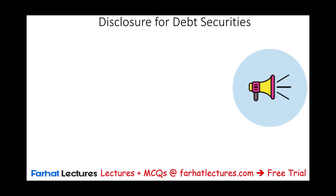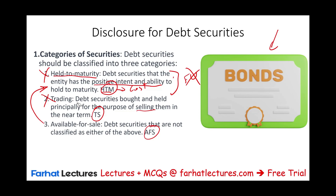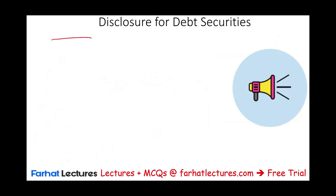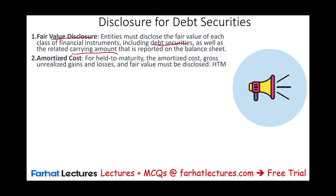What do we have to disclose in addition to the categories? Trading and available for sale are reported at fair value, so we need a fair value disclosure. Entities must disclose the fair value of each class of instrument, including debt securities, as well as any related carrying amount reported on the balance sheet. We show the carrying amount, the fair value, and the difference will be either a gain or a loss. For held-to-maturity, we show the amortized cost, any gross unrealized gain or loss, and fair value — although it's still reported at amortized cost on the balance sheet.